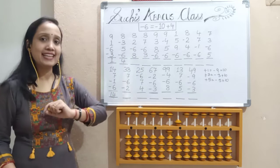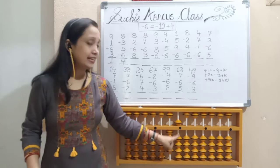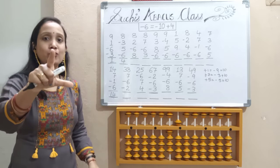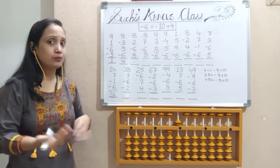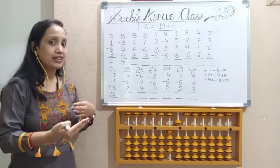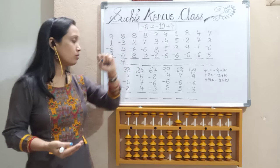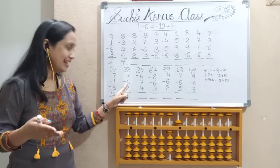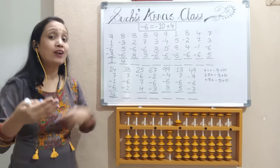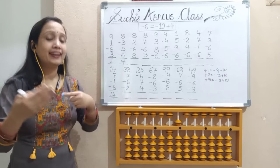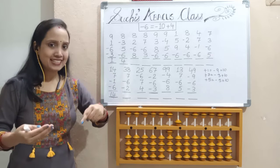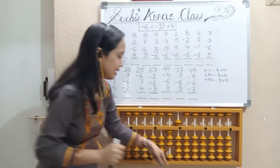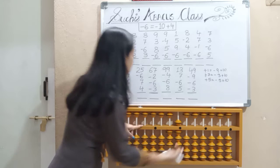Next, less 6. I need in 1's place 5 and 1 pinch out, but I don't have it. Less 6 is not possible. Go for formula — formula for add 6 or less 6? Less 6. For less, who will go out? 10 will go out. So it's less 10 and 4.